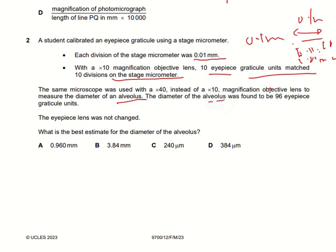The diameter of the RBC was found to be 96 eyepiece reticule units. The eyepiece lens was not changed. We need to find the best estimate for the diameter of the RBC. When matching eyepiece reticule units with the magnification of the objective lens, the answer comes out to be 240 micrometers — so that is the correct option.